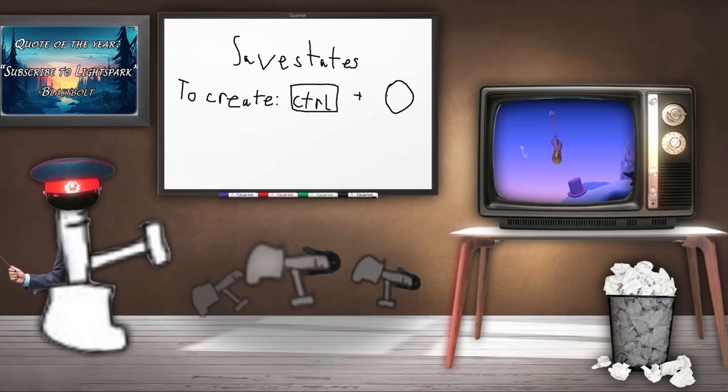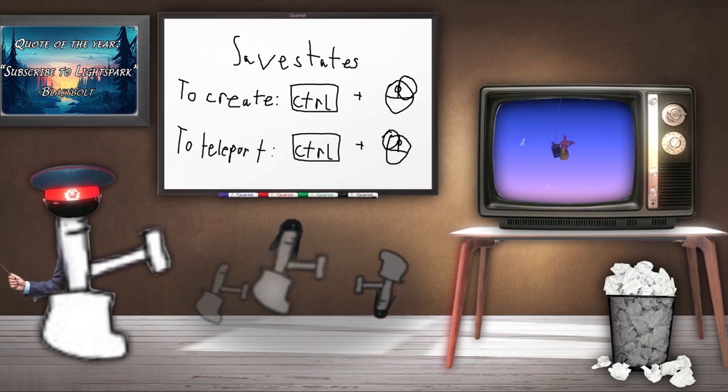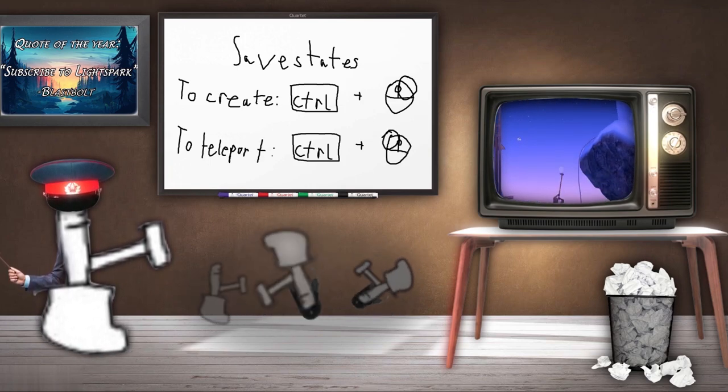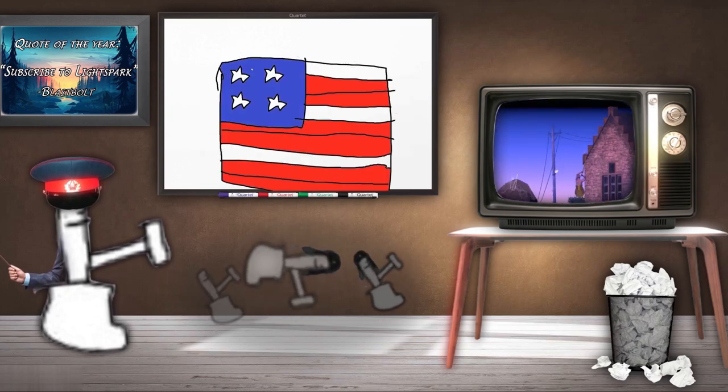To create a save state, hold ctrl then mouse right click. To teleport to one, hold ctrl then left click. There are also a few premade save states which can be triggered with the number keys, but if you want more freedom, just know you can create them wherever you want.